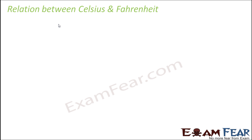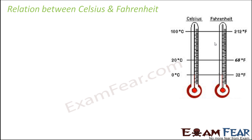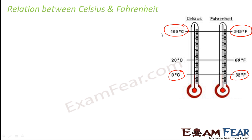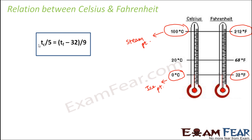Let us look at the relationship between Celsius and Fahrenheit. Comparing the two scales: 100 degrees Celsius corresponds to 212 degrees Fahrenheit (steam point), and 0 degrees Celsius corresponds to 32 degrees Fahrenheit (ice point). The formula relating them is: Tc divided by 5 equals Tf minus 32 divided by 9, where Tc is the temperature in Celsius and Tf is the temperature in Fahrenheit.